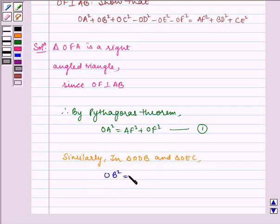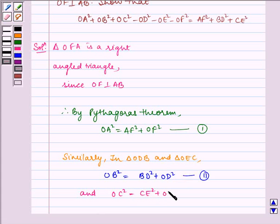OB² = BD² + OD², let us name it as (2). And OC² = CE² + OE², let us name it as (3).